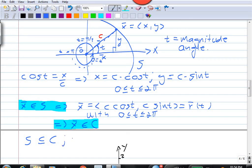S is a subset of C. And we already know that any point on C is on S. In other words,